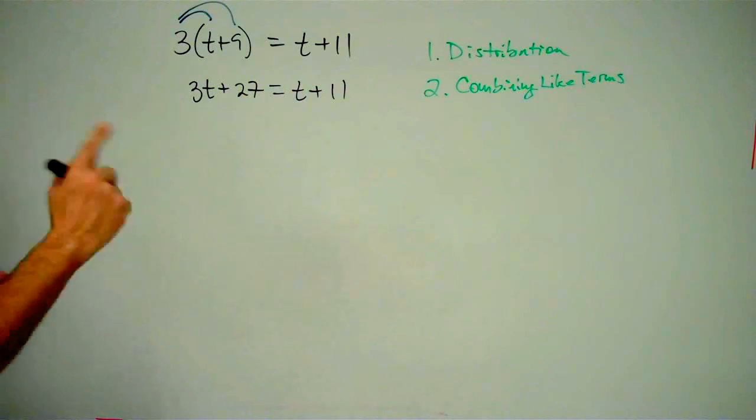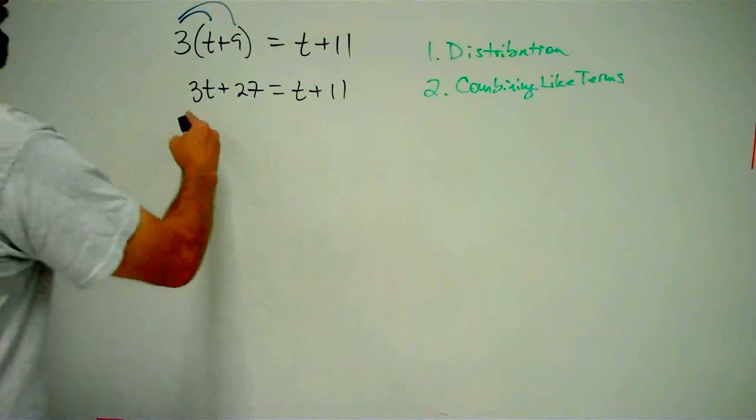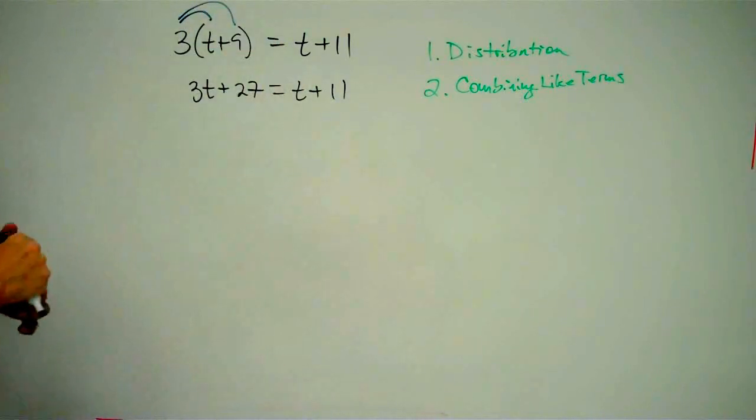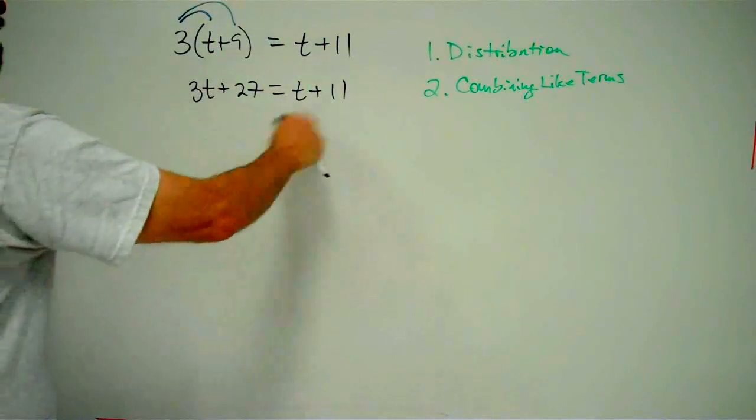Now, remember, the one most important rule of algebra is whatever you do to one side of the equation, you must also do it to the other side of the equation. So, when I look at this, I think to myself, I've got too many t's up on the board here.